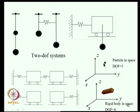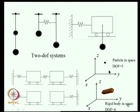A particle moving in Cartesian space needs X, Y, Z coordinates - it is a 3-degree-of-freedom system. But if modeled as a rigid body, we need not only the center of gravity coordinates XYZ but also direction cosines for the orientation, making it a 6-degree-of-freedom system.